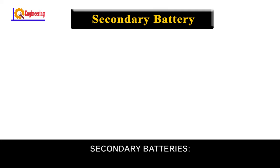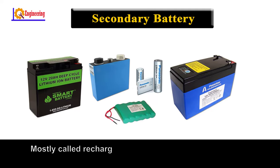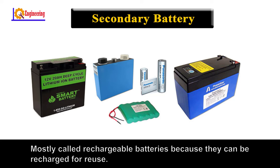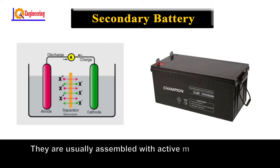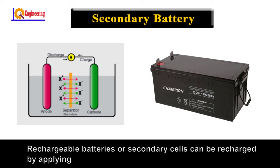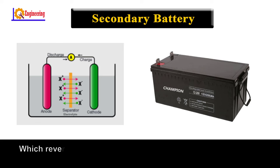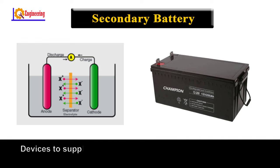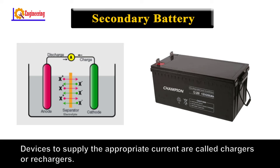Number 2: secondary batteries, mostly called rechargeable batteries because they can be recharged for reuse. They are usually assembled with active materials in the discharged state. Rechargeable batteries or secondary cells can be recharged by applying electric current, which reverses the chemical reactions that occur during use. Devices to supply the appropriate current are called chargers or rechargers.